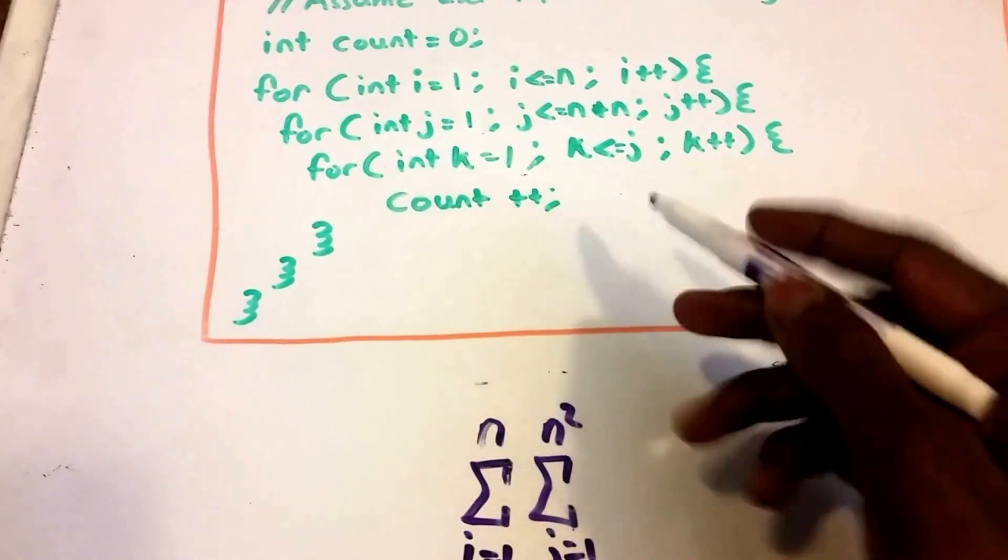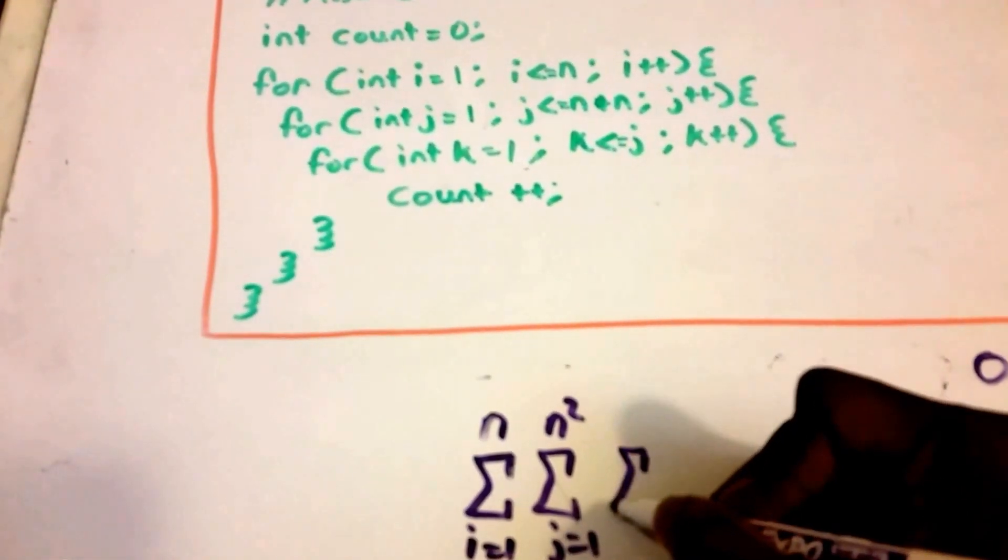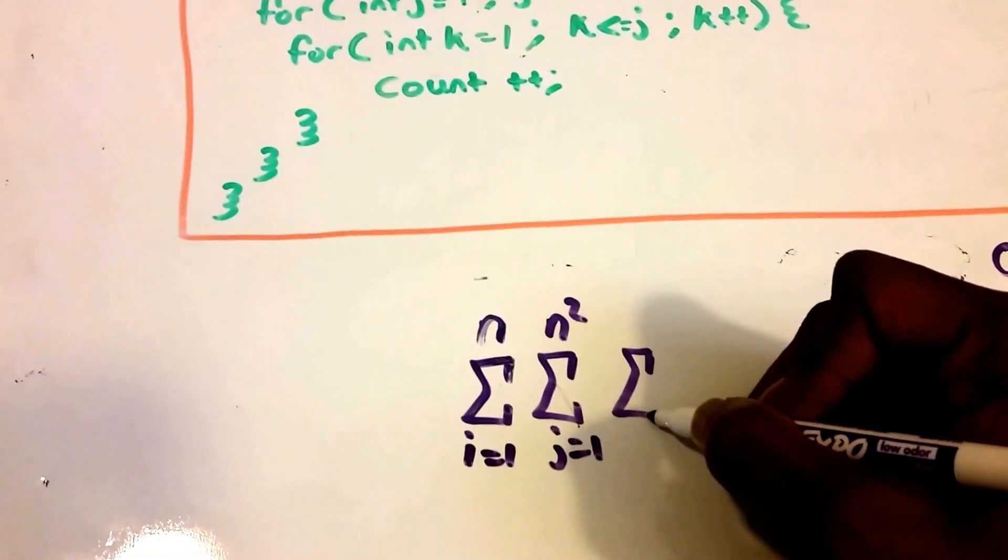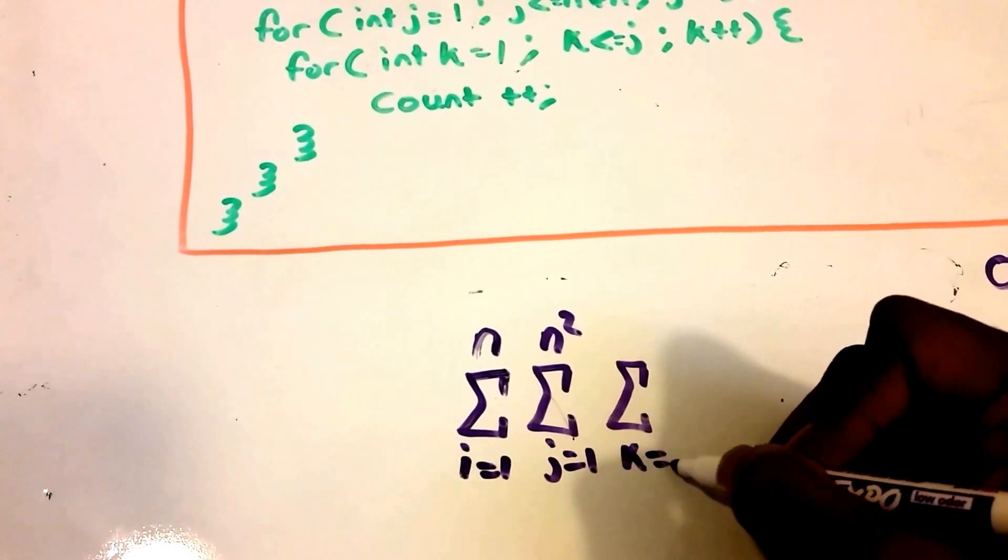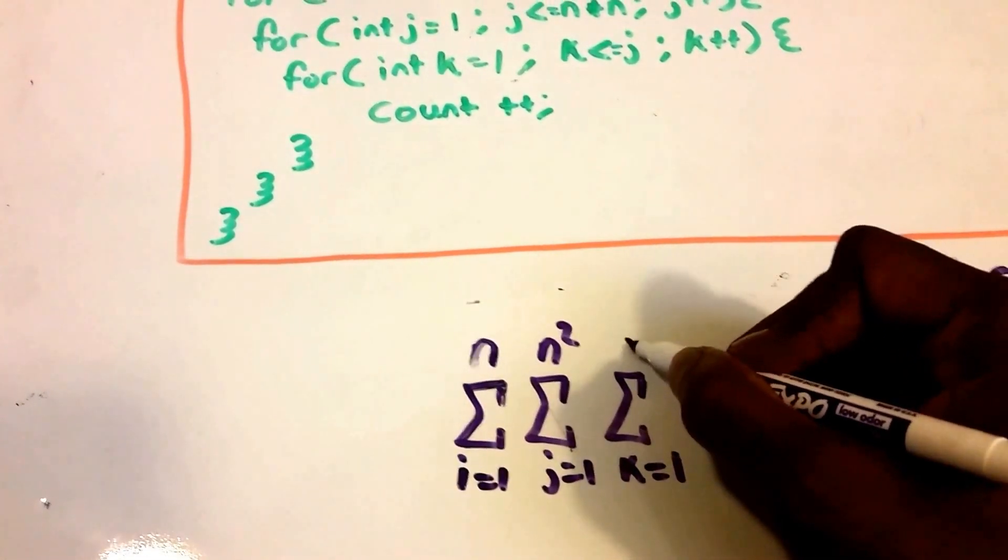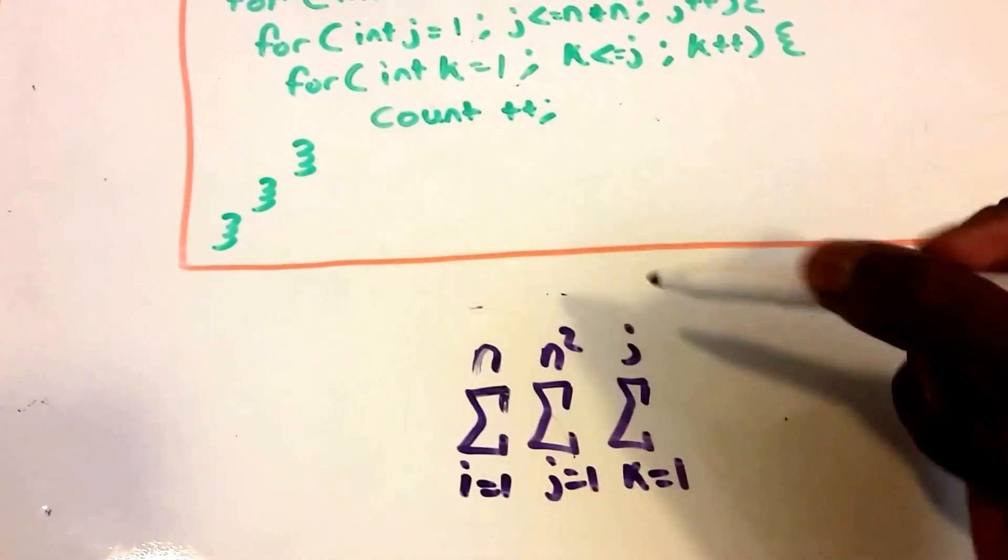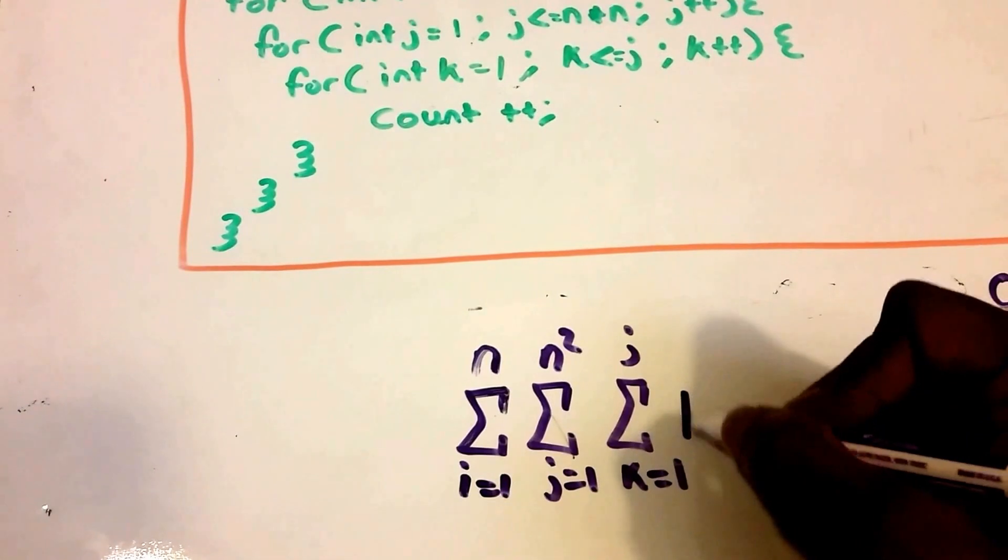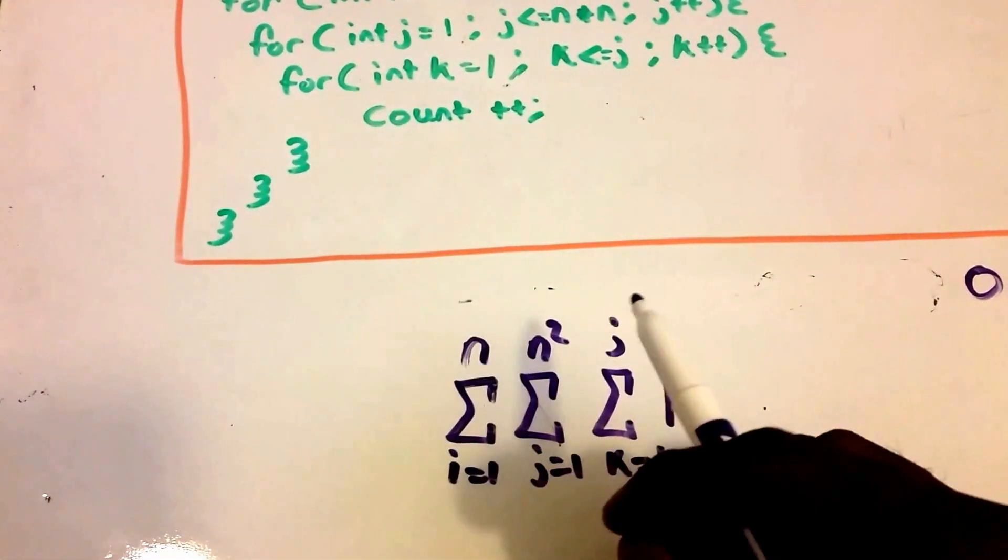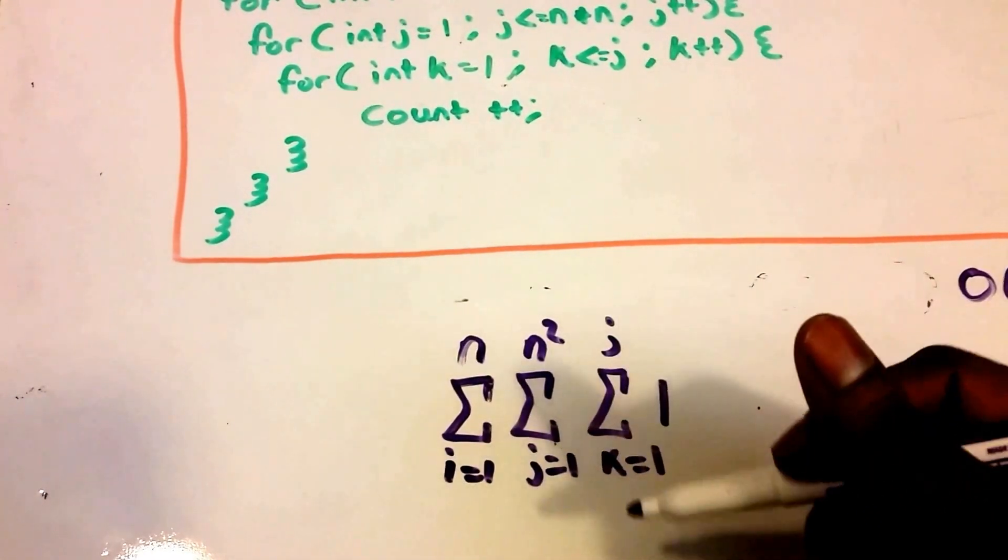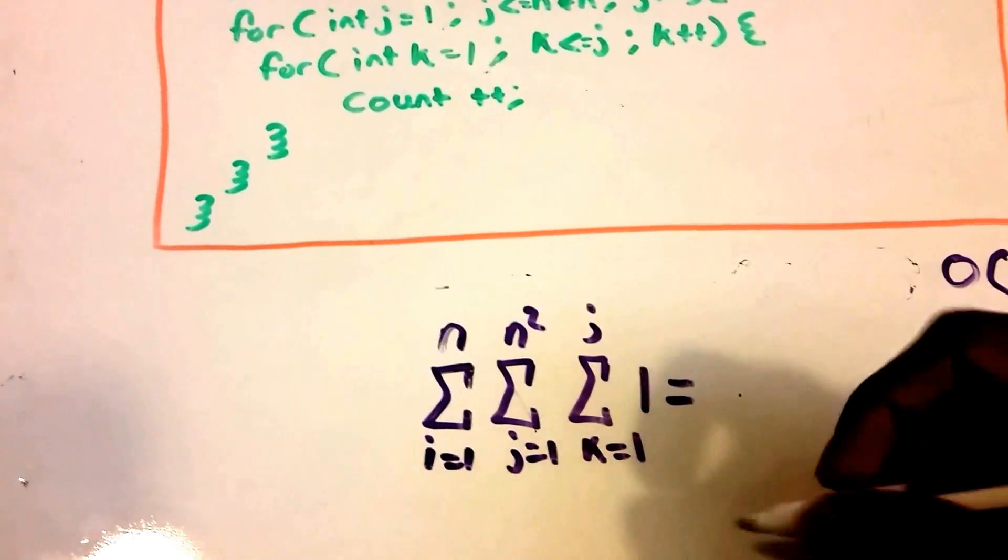And then we have our third loop here. Our third loop is gonna run from k equals one all the way up to j. And then we have some statement being executed within that loop a constant amount of times. So now we've set up our equation to figure out the Big O of this code and let's solve this.